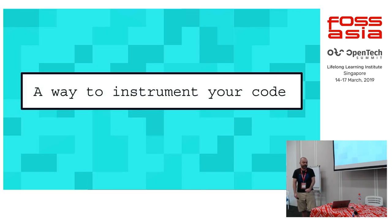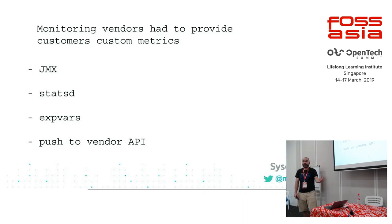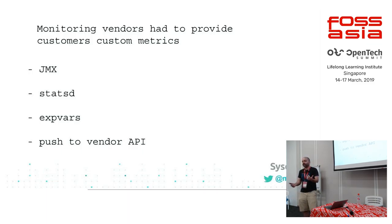Let's talk about the first component: Prometheus as a way to instrument your code. The problem it's really trying to solve is that if you wanted to pull Java metrics you had to pull in JMX format, custom metrics might be pushed to statsd, then pulled from statsd and stored in a database. You have things like vendor APIs — a common one I deal with is the Docker Hub registry, where you query the API to find out number of pulls to track the success of open-source projects.